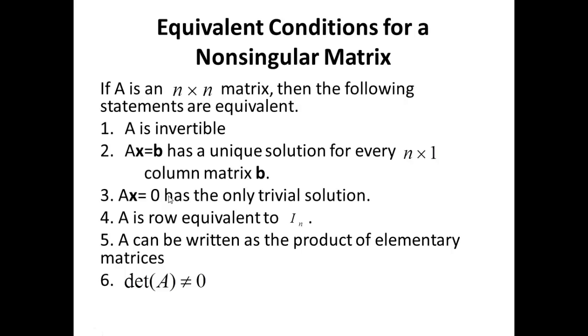Number 4, A is row equivalent to IN. I.e., I can use elementary operations and move from A to the identity matrix IN. Number 5, A can be written as a product of elementary matrices. That follows straight from point number 4. And number 6, the determinant of A is different from zero. That too follows very directly from the properties we've seen above.